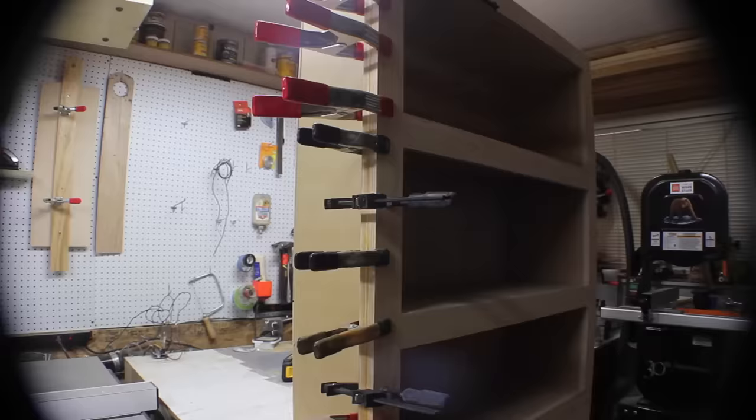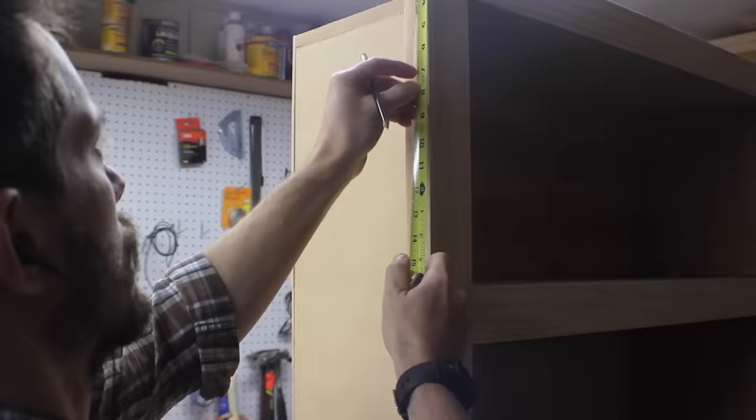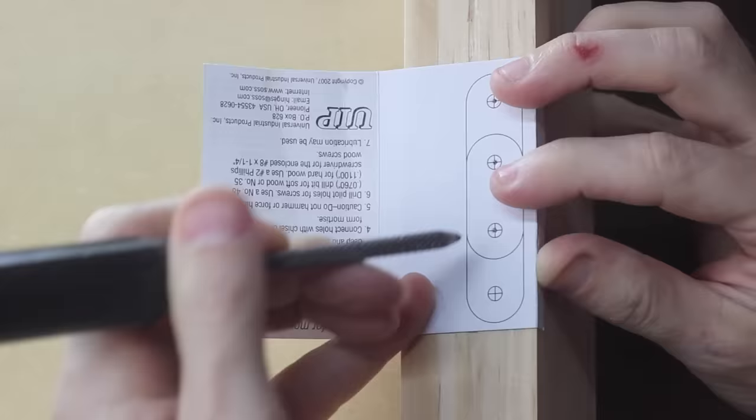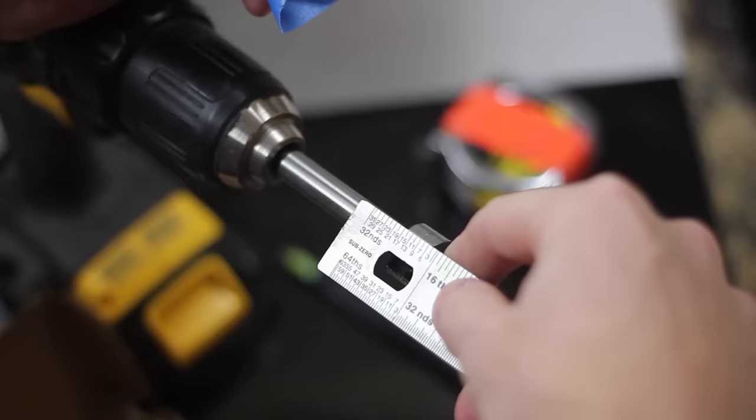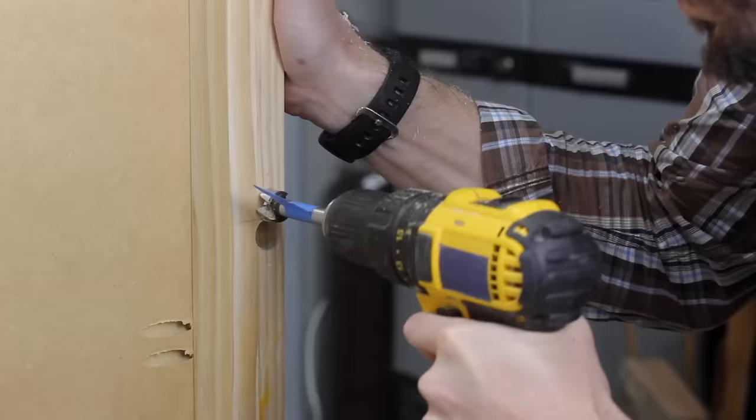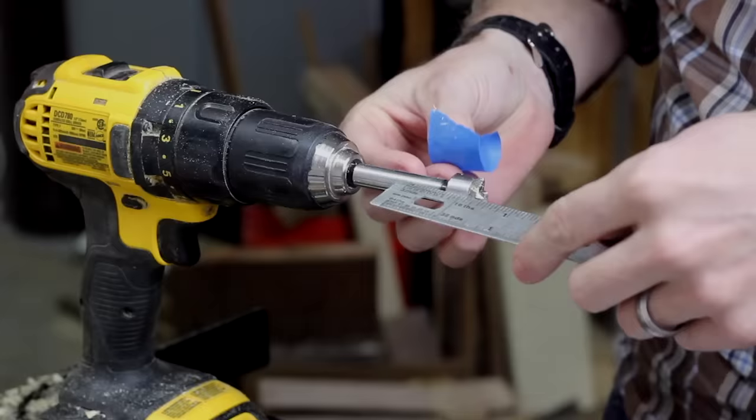For these particular hinges, you mark the center point and then you use a template and mark where the holes are going to be. These hidden hinges are really awesome. I'll have links to everything you need in the description. I marked off the necessary depth on the Forstner bit and then drilled the holes. You want to make sure you don't go too deep here because then the hinge would not sit flush with the face.